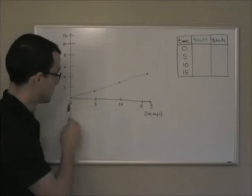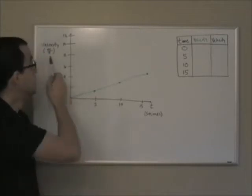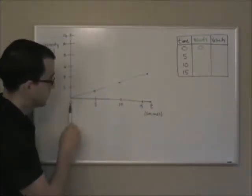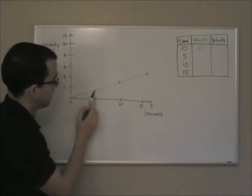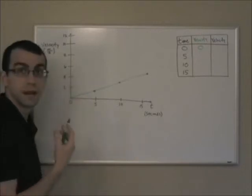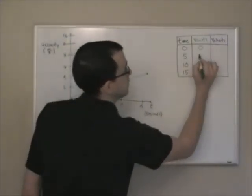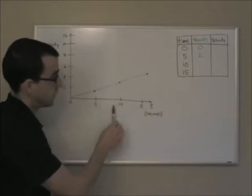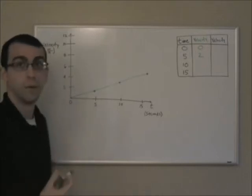At zero seconds, the velocity is zero meters per second. Increasing by five-second increments, at five seconds the velocity is two meters per second — an increase of two meters per second. At ten seconds, the velocity has increased another two meters per second, and is now at four meters per second.